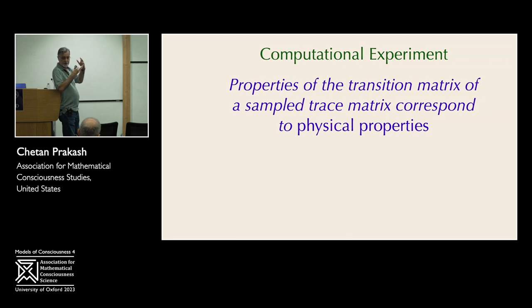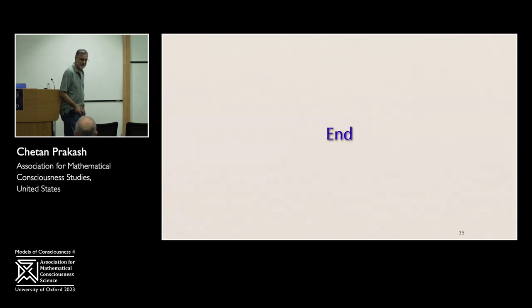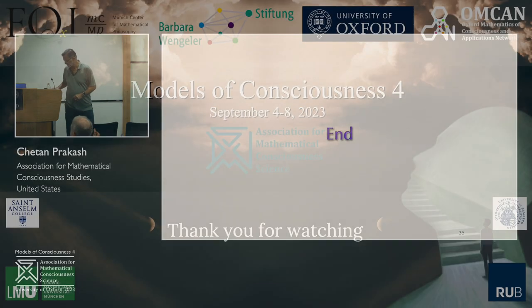The computational experiment that we're proposing then is to take properties of the transition matrix of a sample trace matrix corresponding to a general situation, and to find one which is such that it corresponds to physical properties. And that's the question. Can this give scattering amplitudes in space-time? We think there's a very good chance, actually, because of the combinatorial situation. And the idea is to compare this with the experiment. That's what we're proposing. That's it. Thank you.